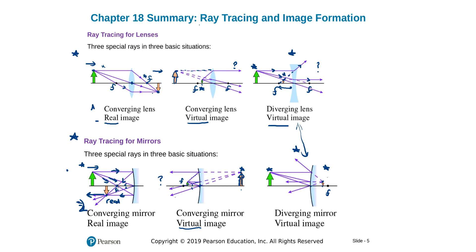An important distinction: for a lens, real images form on the opposite side from the object, while virtual images form on the same side as the object. For a mirror, it is the opposite — real images are on the same side as the object, and virtual images are behind the mirror on the other side. This applies to both converging and diverging types.